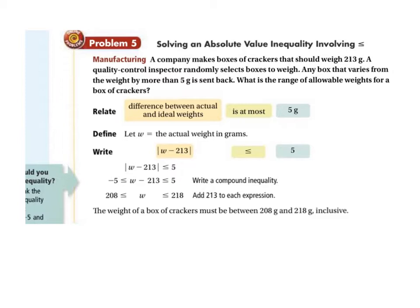Anyway, so, difference of actual weight and ideal weight is at most. So, we're looking at some subtraction there, right? So, W is the actual weight. W minus 213 has to be less than or equal to 5. So, what I'm saying is the actual weight of the crackers minus that 213 that's ideal cannot be bigger than 5. Okay? And it's obviously going to be an absolute value problem. And, again, when we write this, this is an and situation since it's less than or equal to. So, we can create, you know, a three-sided problem, if you will. So, start off by adding that 213. And we find that the weight has to be between 208 and 218.